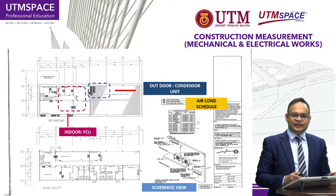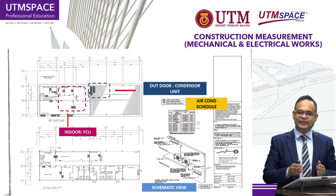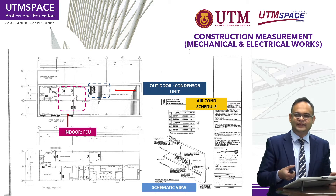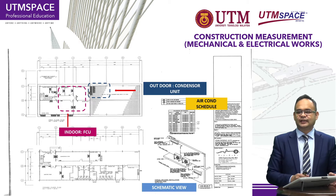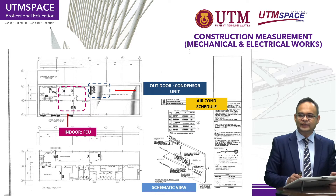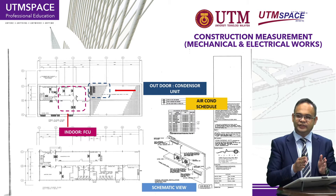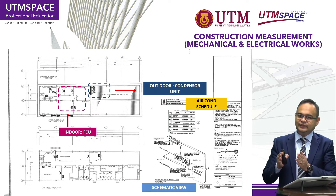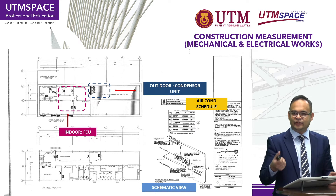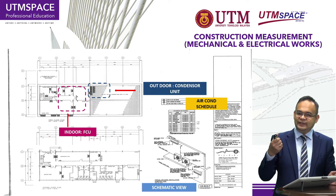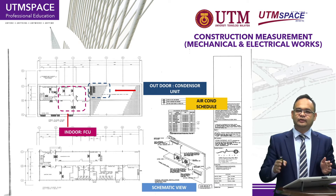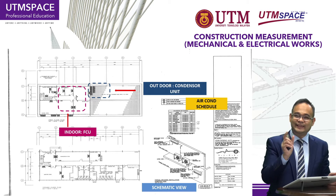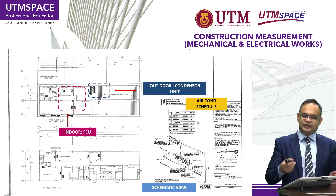Normally, engineers will communicate with us using drawings. Engineers will tell us what type of components and equipment are used for air conditioning installation in buildings using what we call an air conditioning installation layout. This is an example of a layout drawing, which shows first the location of the equipment, and second the air conditioning schedule, which contains the location of that particular equipment, the cooling capacity, and the type of air conditioning — whether it needs to be installed on the wall or inside the ceiling.